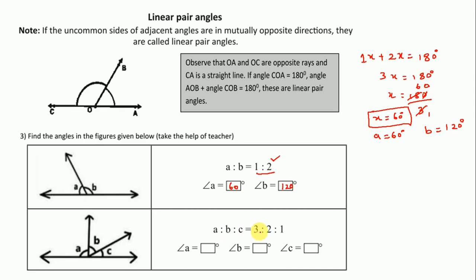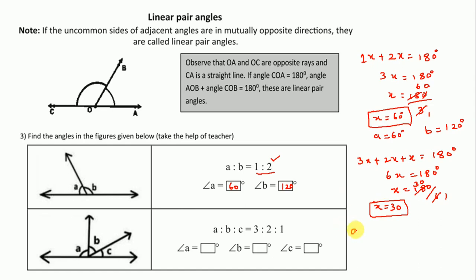Here, A to B to C is given as 3 to 2 to 1. So we write 3x + 2x + x = 180 degrees. That gives 6x = 180 degrees, so x = 180 ÷ 6 = 30. A = 3x = 3 × 30 = 90 degrees. B = 2x = 2 × 30 = 60 degrees. And x = 30 degrees.